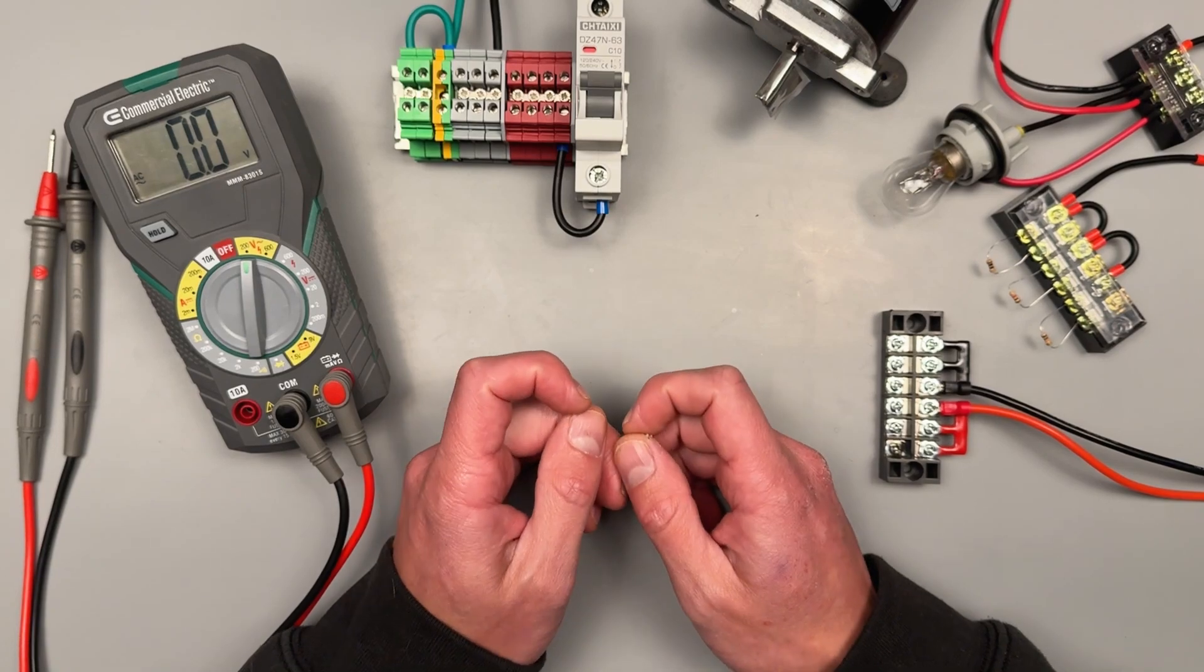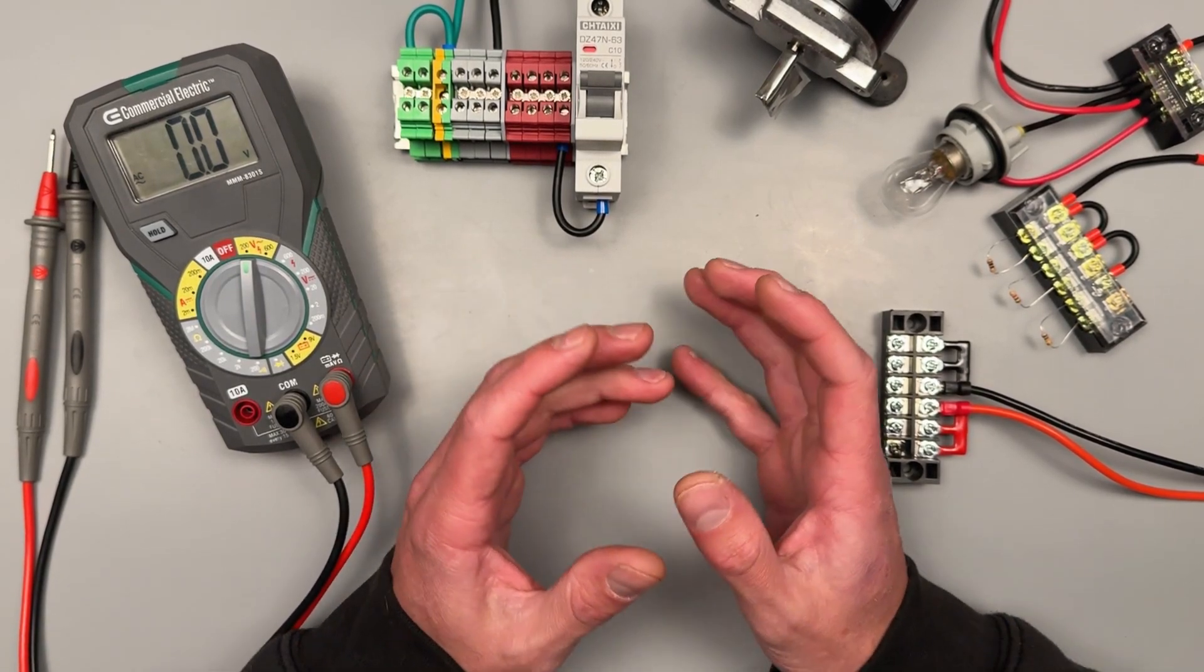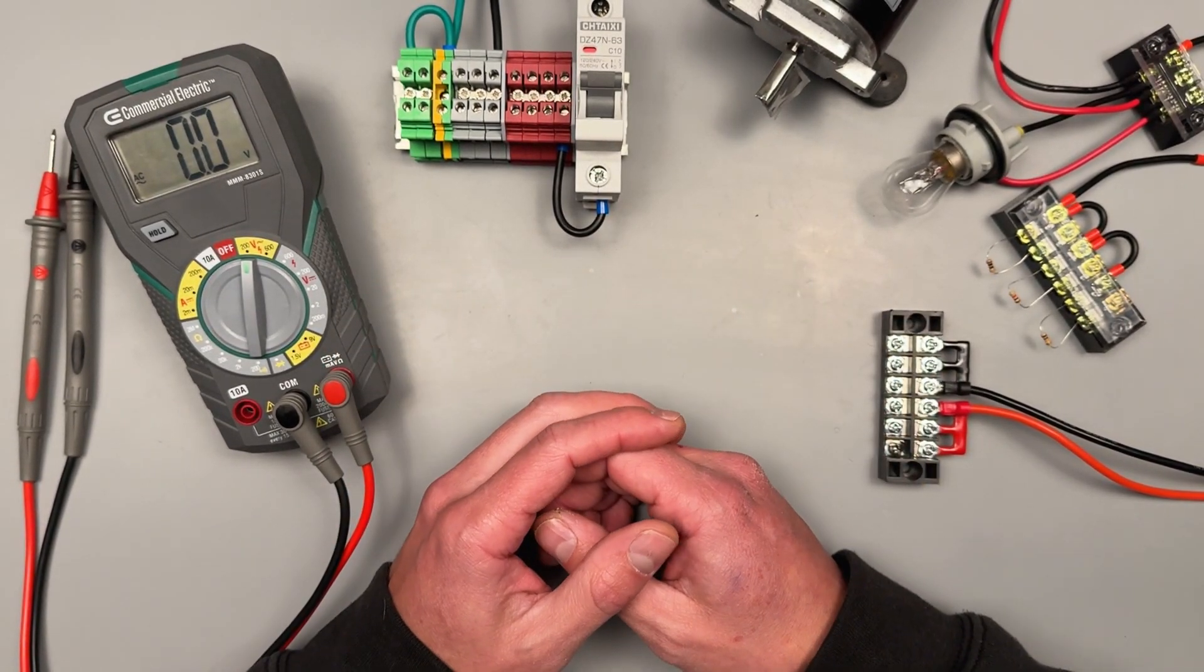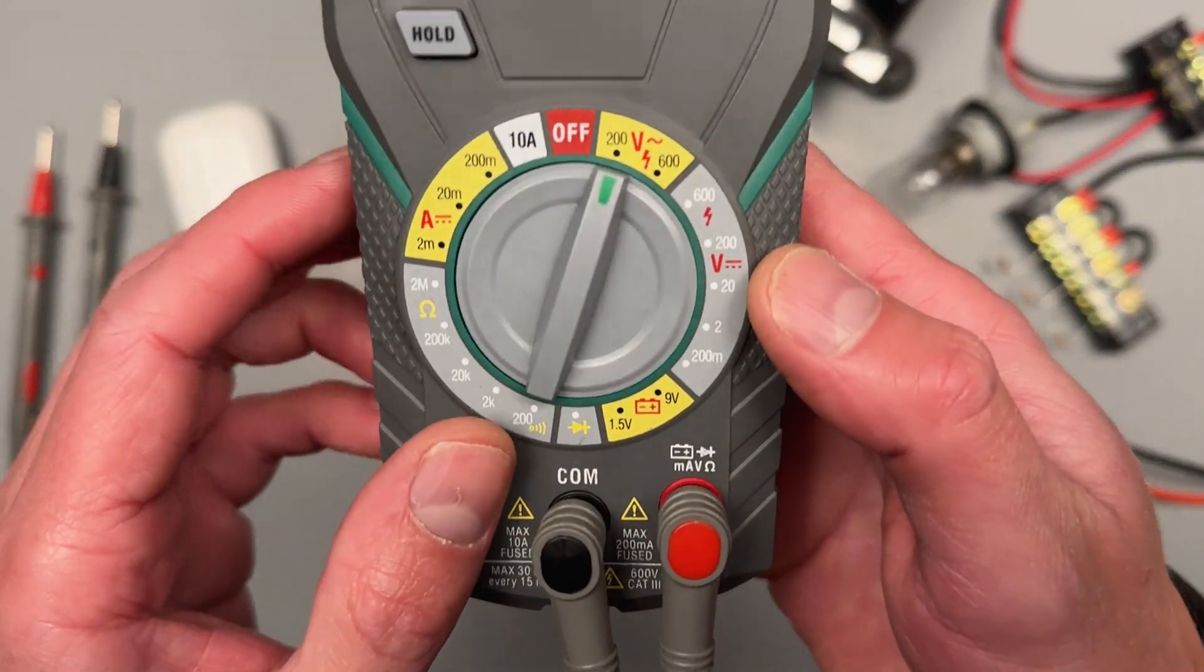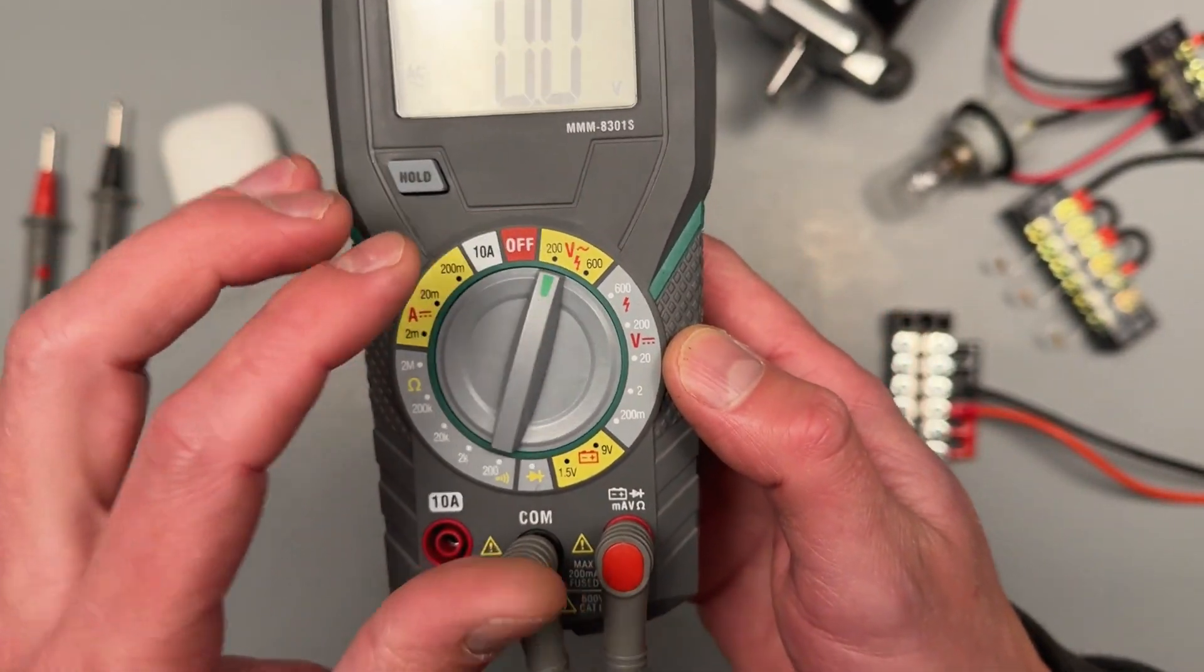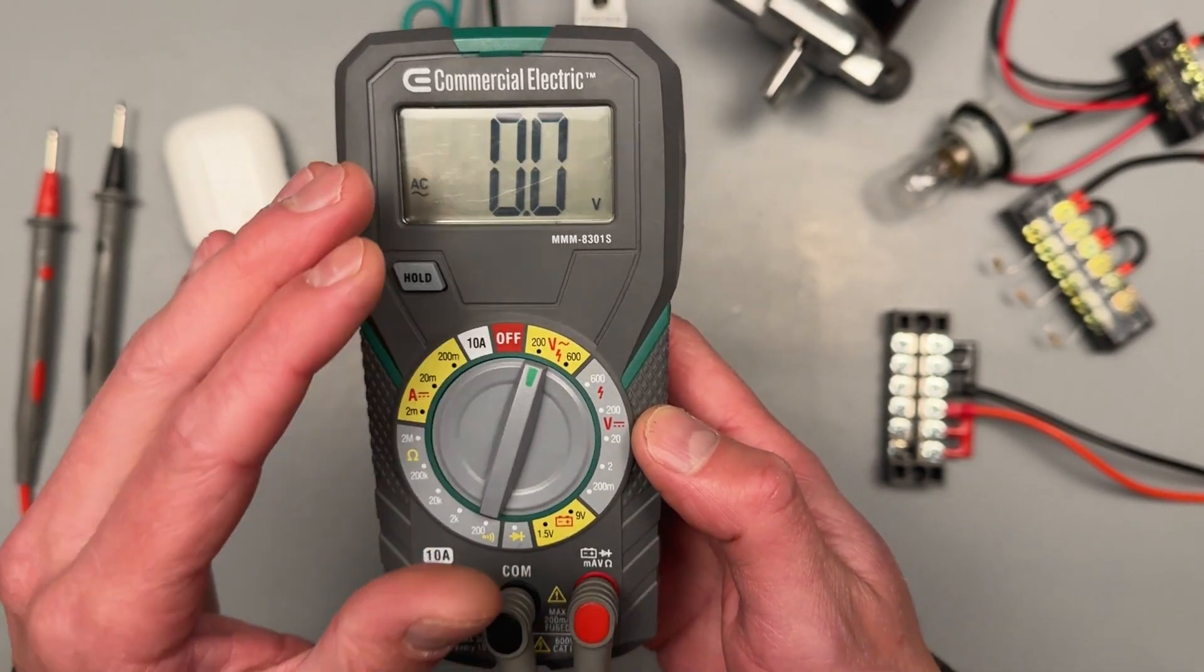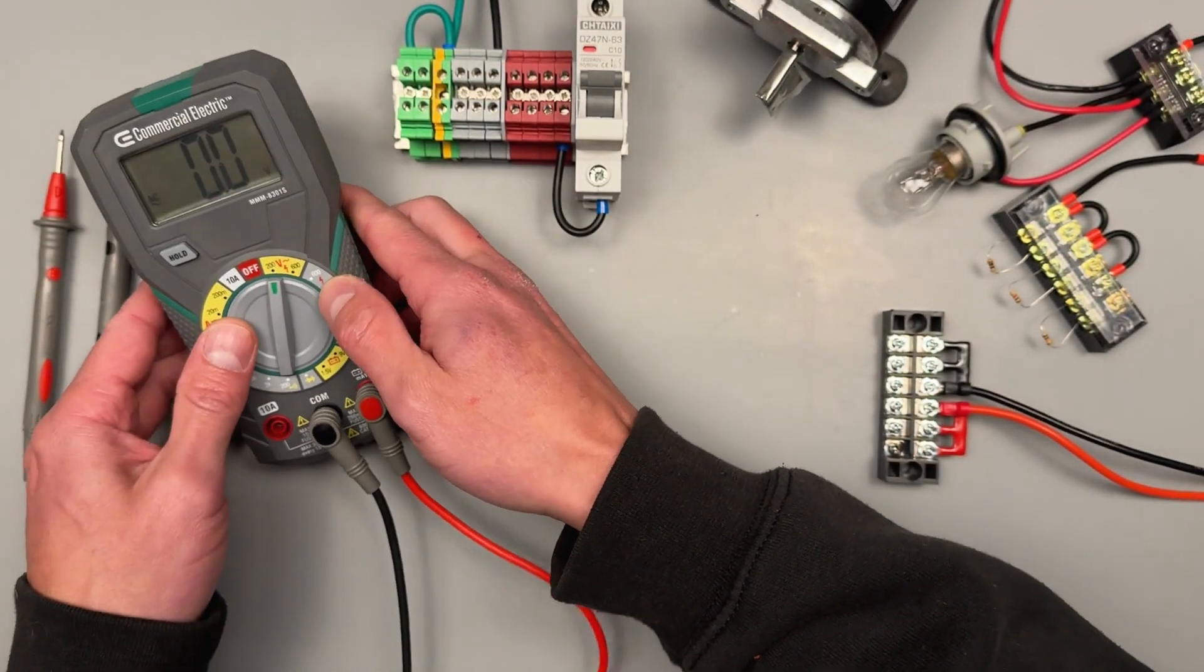How can we tell the difference? Well, it should be on the packaging or the owner's manual, but a manually selecting multimeter is going to have a whole bunch of different settings and it can be kind of overwhelming. So I'm going to be here to help break that down for you.